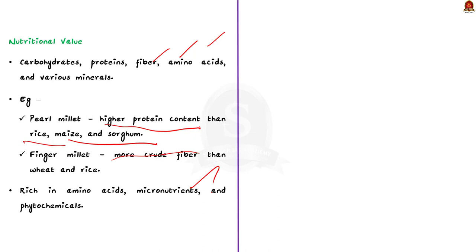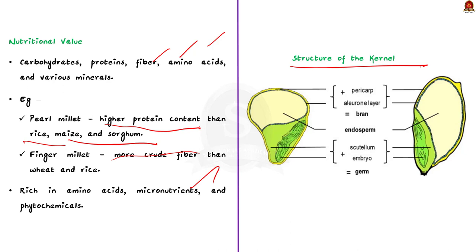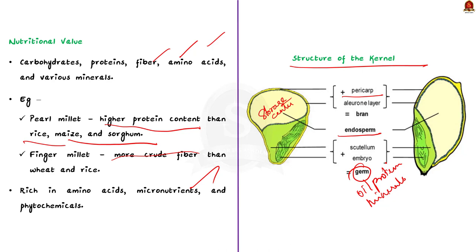Let us see the structure of a millet kernel before understanding processing. A millet kernel consists of three main parts: the pericarp, endosperm, and germ. The pericarp along with the husk protects the kernel from unfavorable conditions, diseases, and physical damage. The endosperm is the largest part and serves as the storage center, containing proteins, starch, and B-complex vitamins. The germ is rich in oil, protein, and ash as well as minerals. Millets are not sold as-is after harvest — they go through a lot of processing before reaching your plate, because processing can improve shelf life, taste, texture, and makes the kernel visually appealing for marketing purposes.